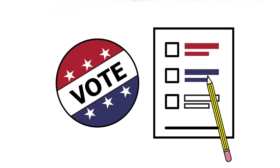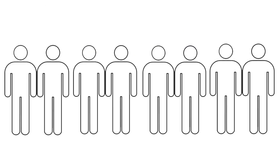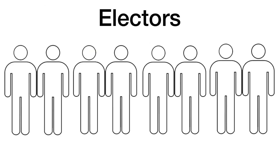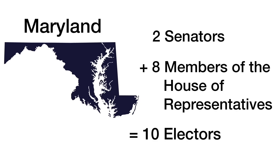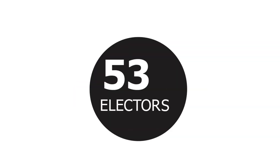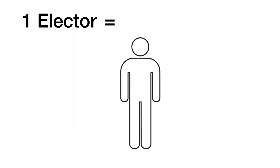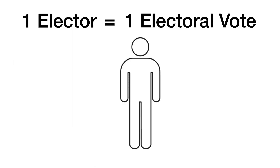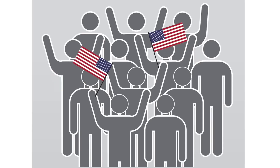On election day, people in every state cast their vote. When people cast their vote, they are actually voting for a group of people called electors. The number of electors each state gets is equal to its total number of senators and representatives in Congress. A total of 538 electors form the Electoral College, and each elector casts one vote following the general election. The candidate who gets 270 votes or more wins.